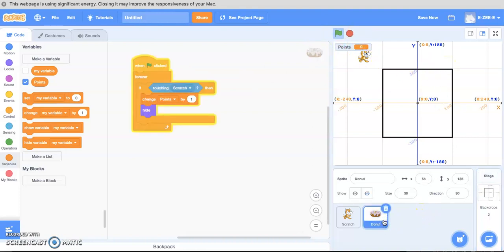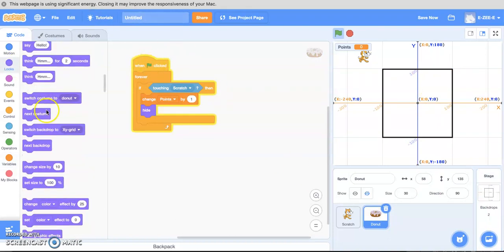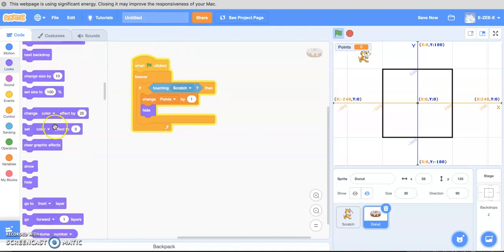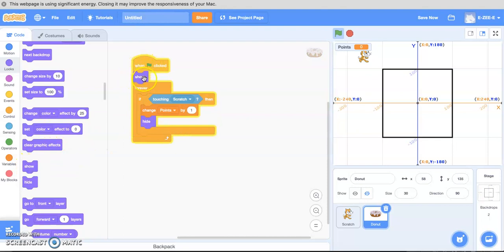Go to the donut. When the game starts, we want to make sure that that donut is there. We got hidden when Scratch picked them up. So we've got to put a show tag. So when the game starts, show the donut. And then we forever check if it's touching Scratch.